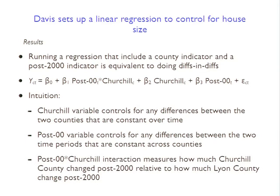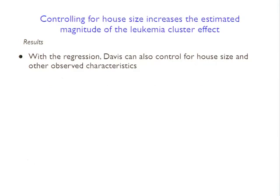What he finds is that controlling for house size actually increases the estimated magnitude of the leukemia cluster effect. In some sense that's not surprising, because the houses in the cancer county are actually getting larger after the cluster is publicized, relative to houses in the other county. Since people are usually willing to pay more for a larger house, you could think of the 7.7% drop as occurring in spite of the houses getting larger rather than because of it. So after adjusting for that, the price effect should be even larger.